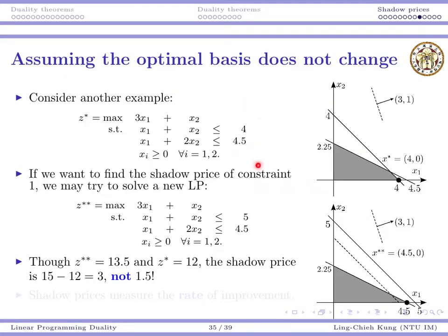Suppose we have a linear program solved with a graphical approach with optimal solution 4. To find the shadow price for constraint 1, we add 1 to the right-hand side, so 4 becomes 5. The constraint shifts to the right and the optimal solution becomes 4.5. In this case the new optimal objective value goes to 13.5, so the shadow price seems to be 1.5. However, according to our definition this is wrong, because we assume the optimal basis remains optimal — meaning the set of binding constraints should still be the same.